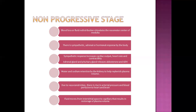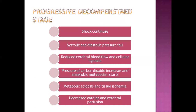Fluid also moves from the interstitial space to the capillary, which helps restore plasma volume. From the non-progressive stage, shock can be reversed. In the progressive stage, shock cannot be reversed. There is now a fall in systolic and diastolic blood pressure, reduced blood supply to the brain, and the body starts anaerobic metabolism, resulting in metabolic acidosis and tissue ischemia, leading to decreased cardiac and cerebral perfusion.